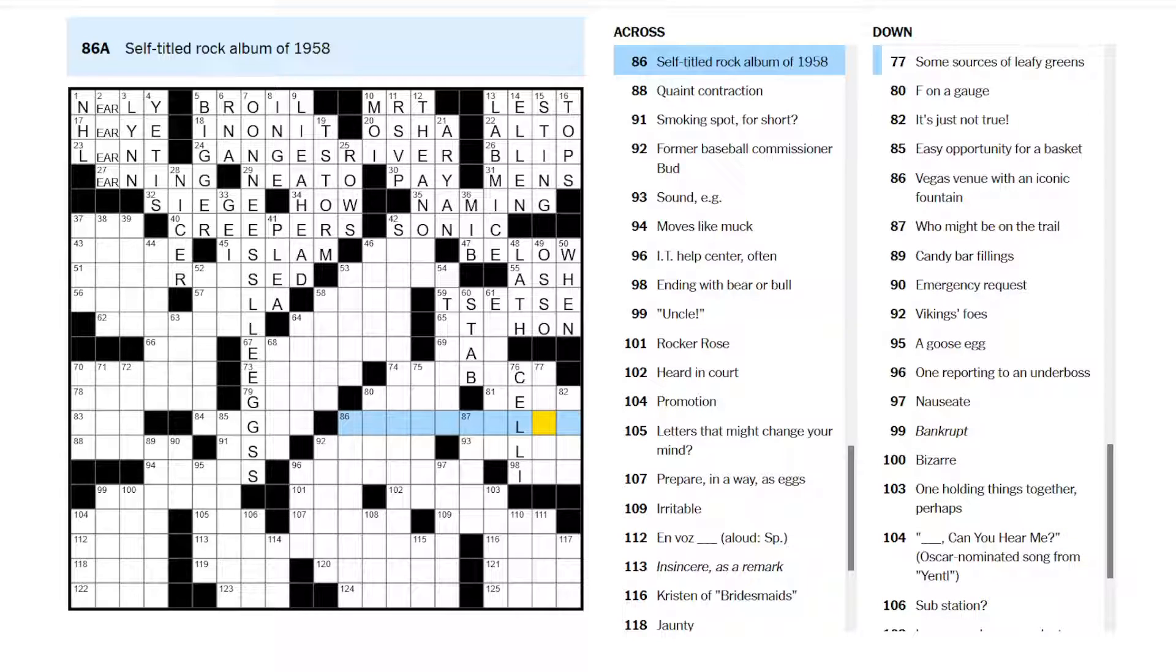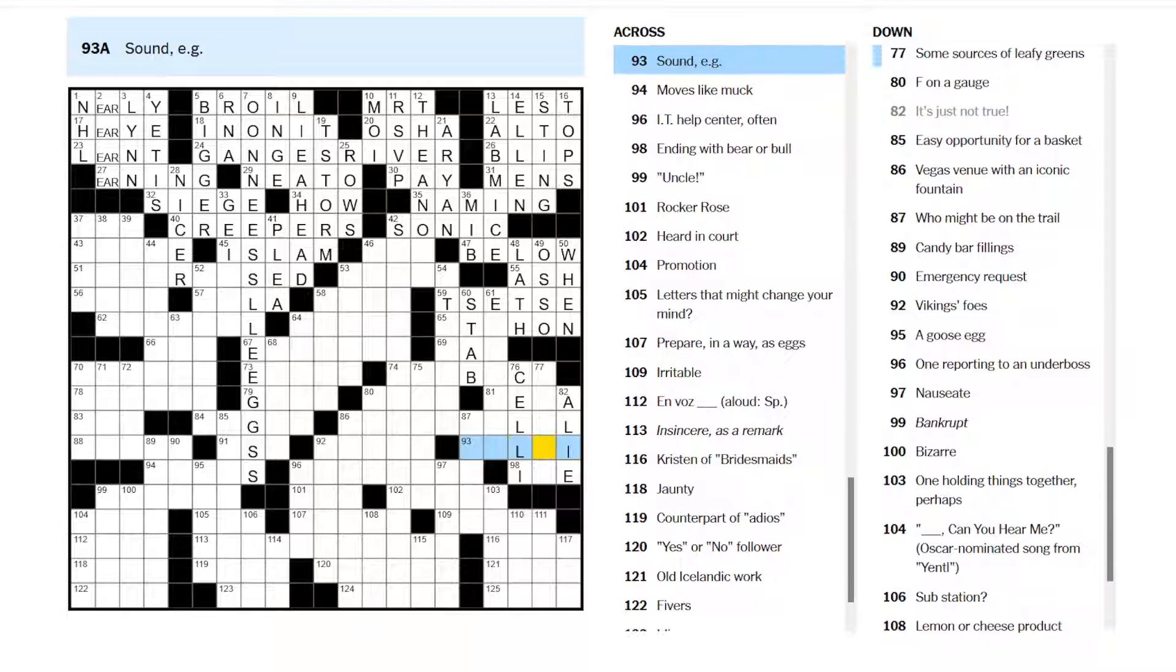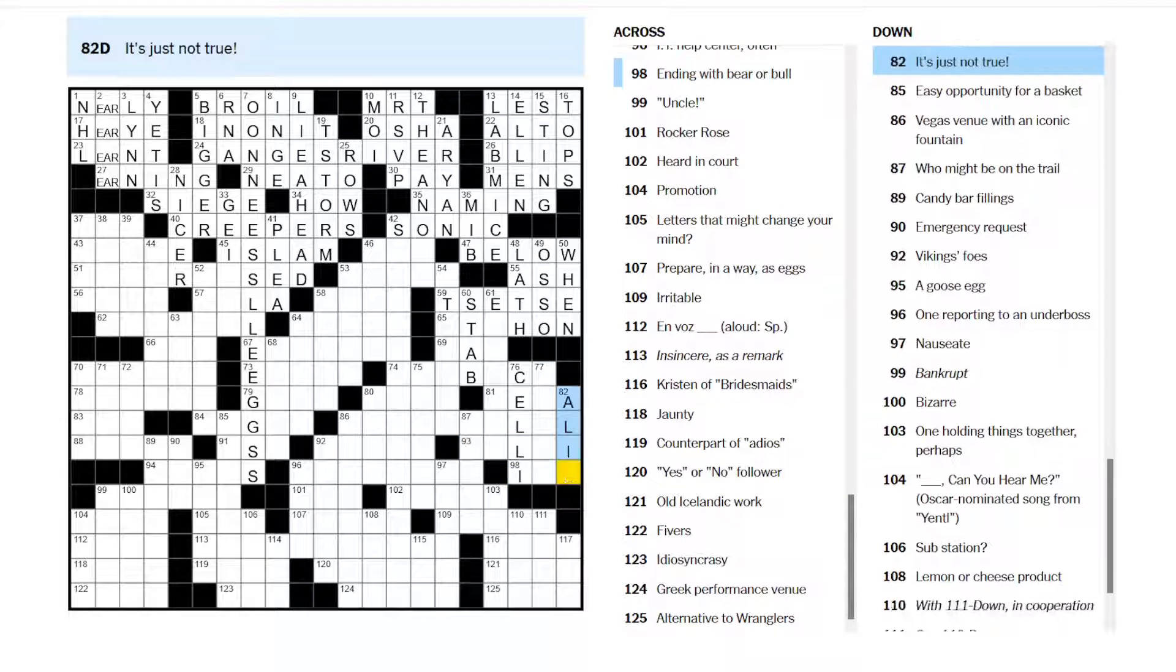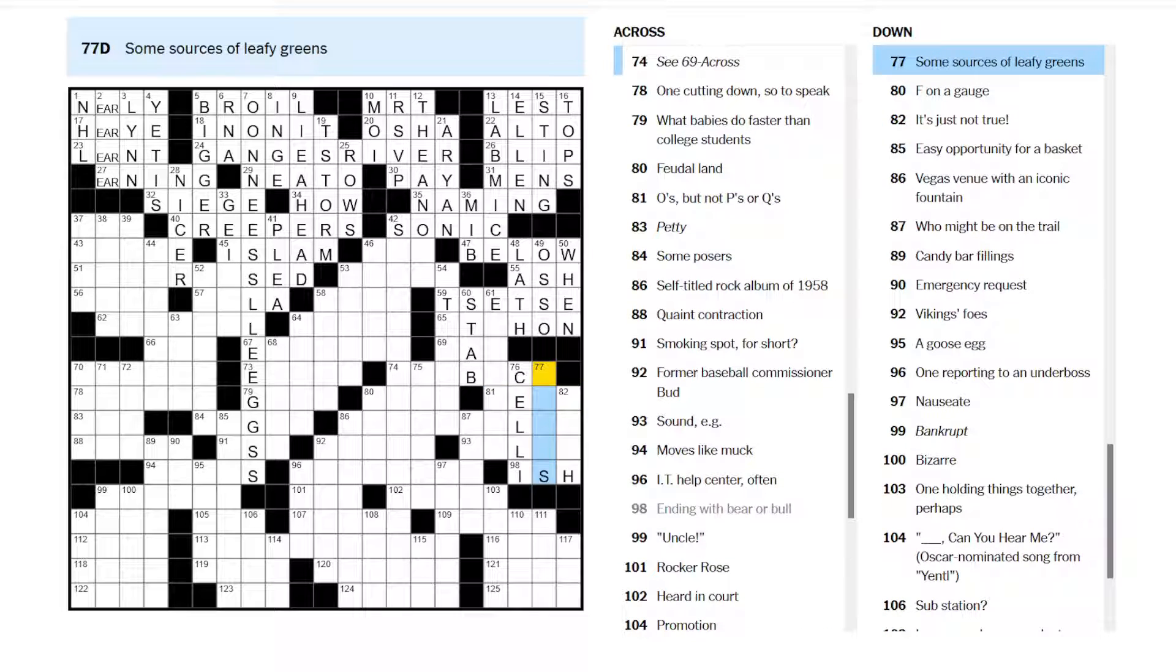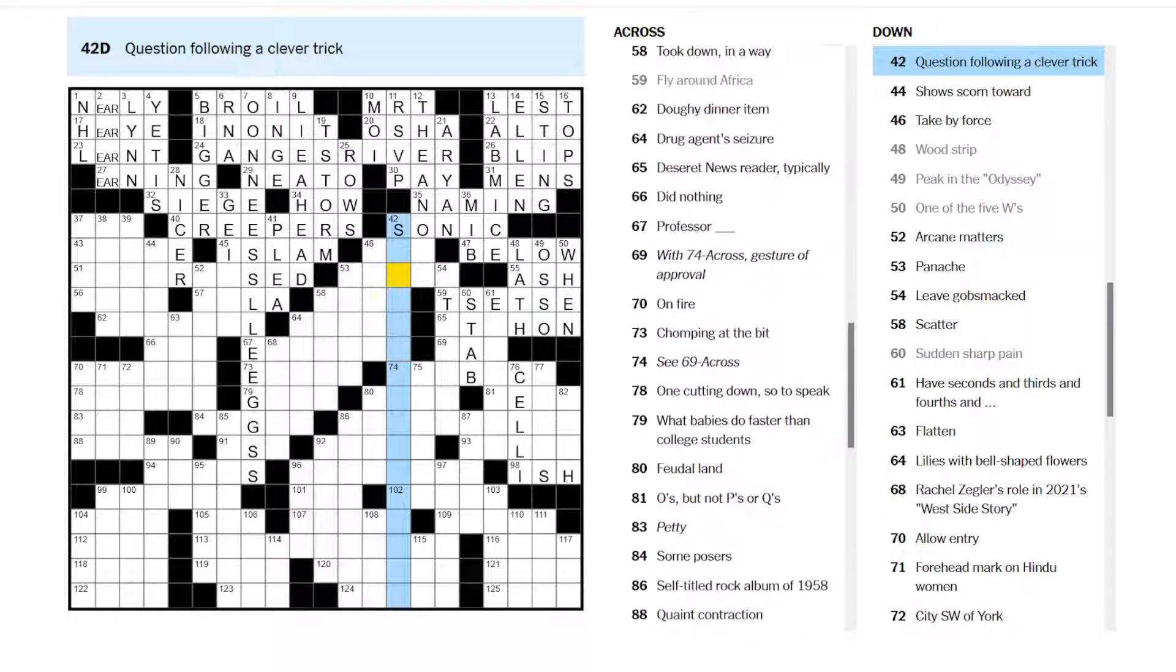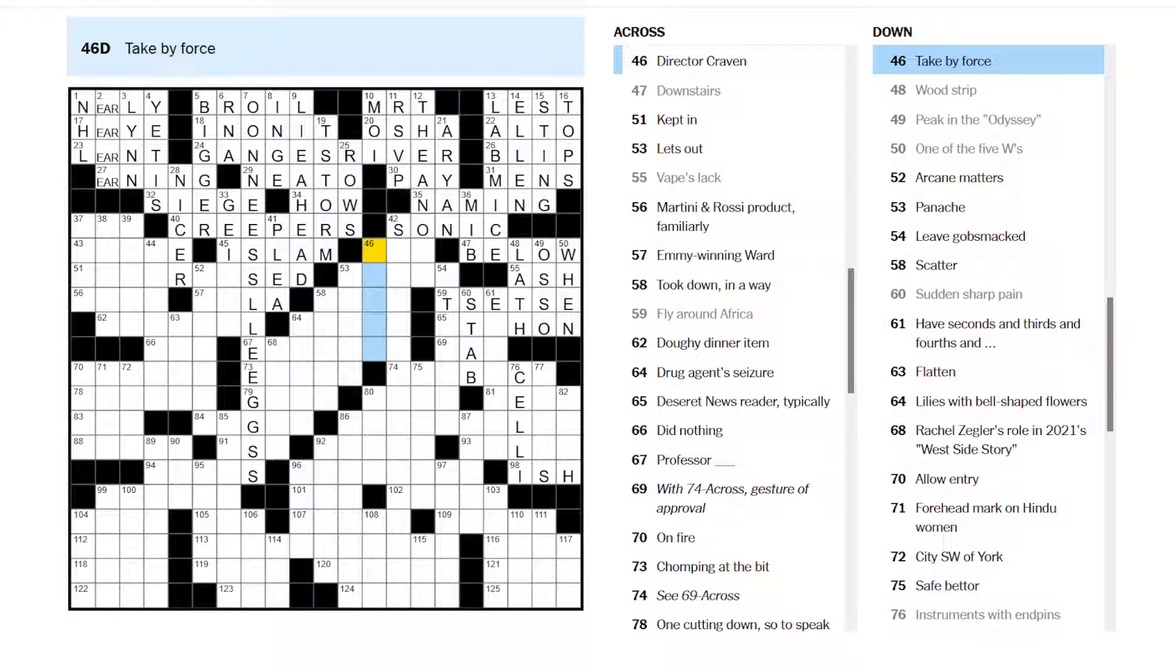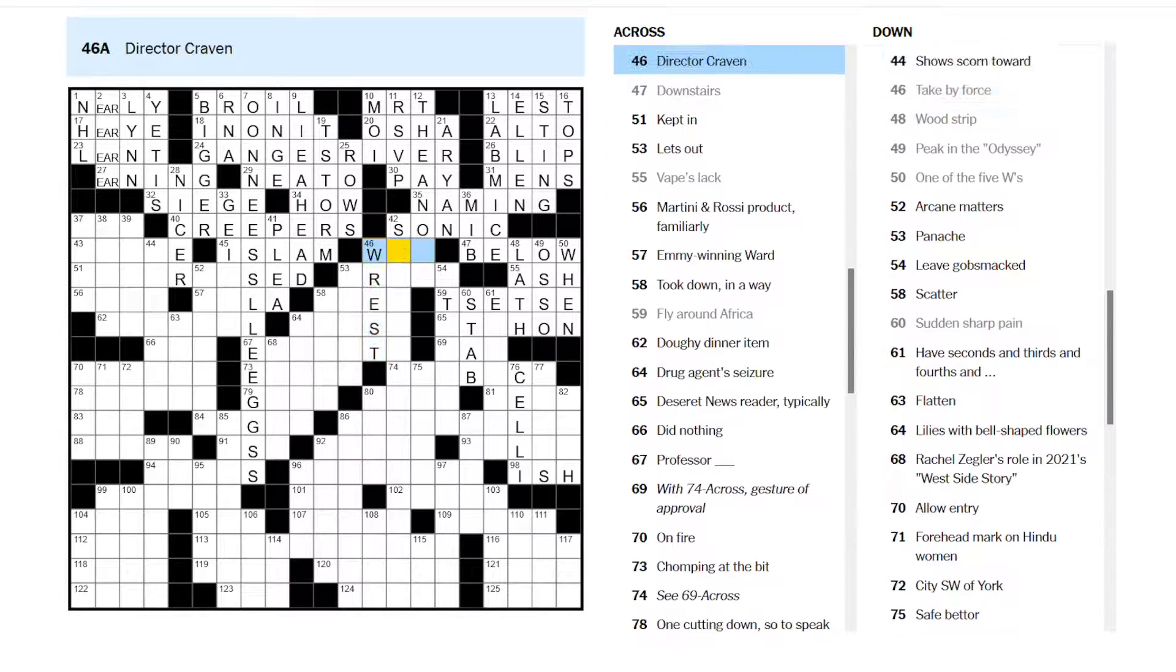Vowels? I'm not sure. Self-titled rock album of 1958. Don't know. It's just not true. A lie? Sound, for example. Ending with bear or bull. Bearish and bullish. It's just not true. Question following a clever trick. How did you do that? Take by force. Maybe it's to steal. No. Rest, I think. That's Wes Craven.